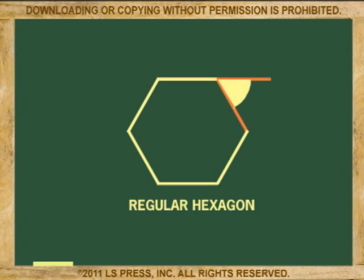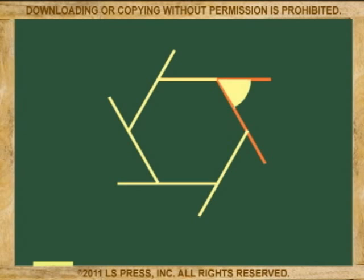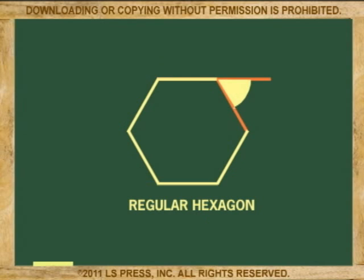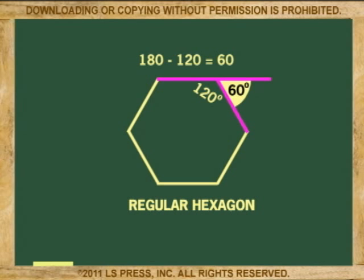Now let's go outside the regular polygons. Every vertex of a regular polygon has exterior angles that are equal. To find the exterior angle, we first find the size of one of the angles, and because they form a linear pair, subtract the interior angle from 180 and the exterior angle is calculated.